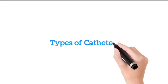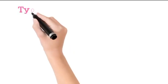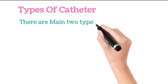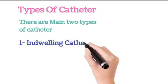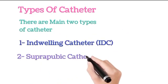Types of catheter: There are two main types of catheter. One, indwelling catheter (IDC). Two, suprapubic catheter (SPC).